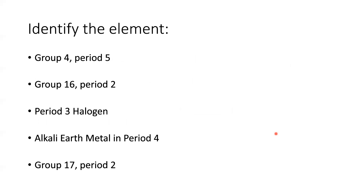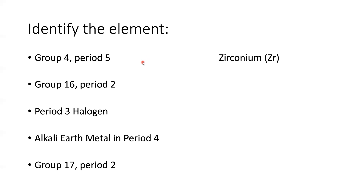See if you can use the information given here. In some cases we're given just the group and the period number; in other cases we're given the period with the group name itself. See if you can take these five pieces of information and identify what those five elements are going to be. Looking at the first one — group 4, period 5. Remember: groups go up and down, periods go left to right. If we're looking at group 4, we're looking at the group that contains titanium, zirconium, hafnium, and rutherfordium. But if we're looking at the fifth period, we should just wind up with zirconium.